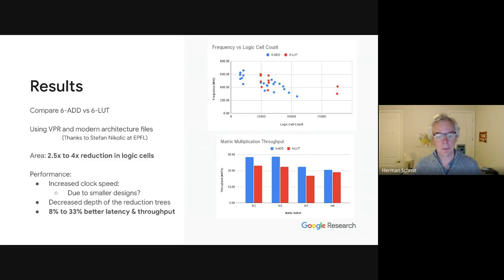The results that we get are we get about a 2.5x to 4x reduction in the logic cells across a suite of matrices that we're compiling. And the performance improvements that we get come in two independent terms. One is that we get higher clock rates, primarily illustrated in the upper right, primarily because the designs are smaller and placing around more efficiently.